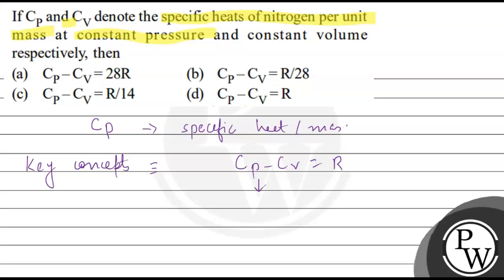And if we talk about per unit mass, then it is given as Cp minus Cv is equal to R upon M, where M is the molecular mass of the gas.